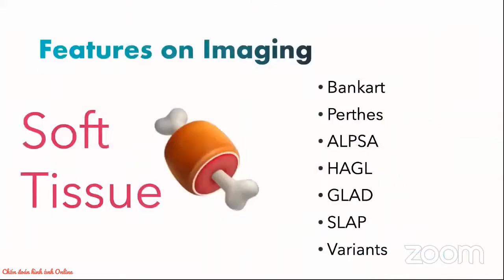Moving on to soft tissue abnormalities that can be seen on MRI. There are many different classically described injury patterns such as Bankart, Perthes, ALPSA, HAGL, GLAD and SLAP. We will go through each of them, highlighting the specific differences. Finally, we will also show you some variants that might be pitfalls in diagnosing these abnormalities.